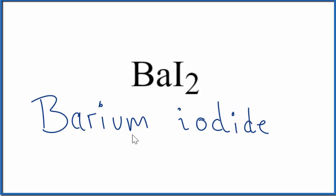If you were given the name barium iodide and asked to write the formula, you know that barium is in group two on the periodic table. It's two plus. Iodine, that's always one minus. So we need two of these one minus charges to balance out the barium. That's why we have B-A-I-2 as the formula for barium iodide.